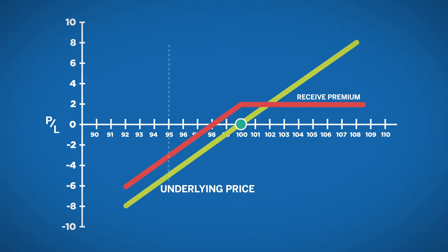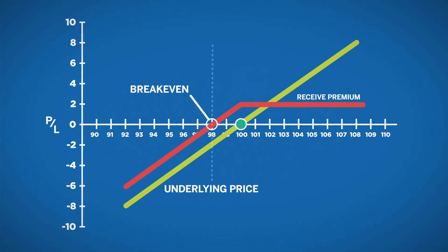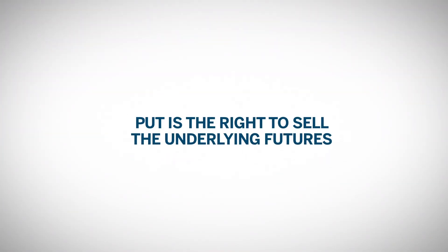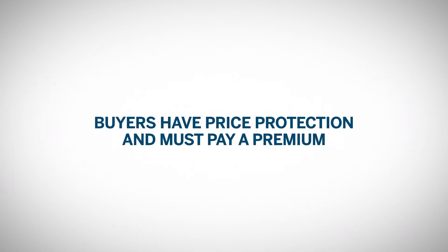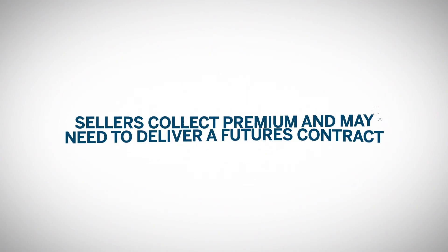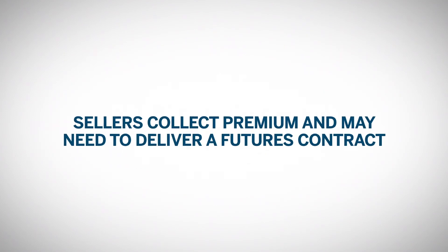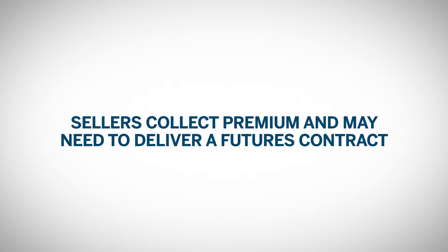Put option sellers have risk to the downside. The break-even point is exactly the same for the put seller as it is for the put buyer. To review: put options are the right to sell the underlying futures contract. Buyers of the put have protection against adverse price movements, but with this protection, they must pay a premium. Sellers of a put option collect premium and accept the risk they may need to deliver a futures contract at a strike price.